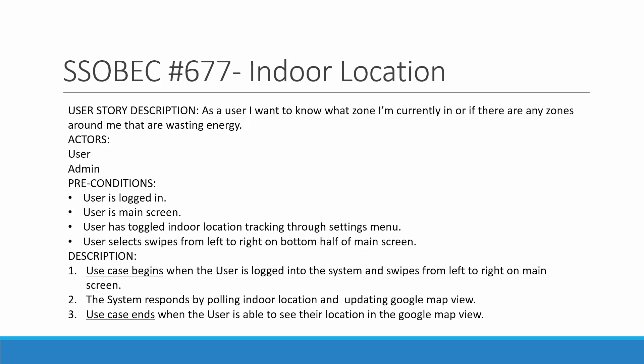The conditions to use this feature are: you must be logged in, be on the main screen, and have toggled the indoor location tracking through the settings menu. To see the result, the user has to swipe from left to right on the bottom half of the main screen to bring out the Google Maps overlay showing your current location inside the building. The use case begins when the user is logged in and swipes left to right; the system polls the indoor location service and updates the Google Map View. The case ends when the user can see their location.